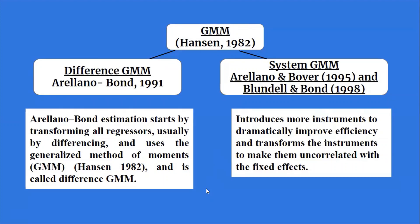There were two advancements in the generalized method of moments. The first is difference GMM, proposed by Arellano and Bond in 1991. The other is system GMM, proposed by Arellano and Bover in 1995 and Blundell and Bond in 1998. Difference GMM transforms all the regressors, usually by differencing, and uses the GMM proposed by Hansen. System GMM introduces more instruments to dramatically improve efficiency and transforms the instruments to make them uncorrelated with the fixed effects.